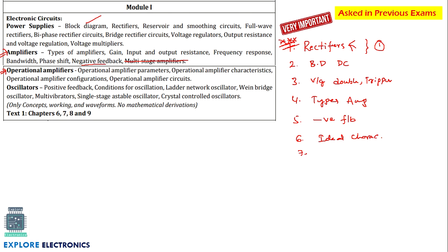There are different op-amp circuits we have studied with no derivation for the output: inverting amplifier, non-inverting amplifier, summer, integrator, and differentiator. They may ask two or three op-amp applications, or ask individually — inverting and non-inverting configuration or integrator and differentiator circuits. You just need to write the circuit and the output expression. One question on op-amps will be there for sure.